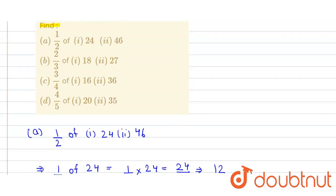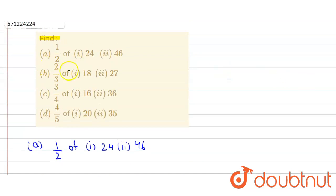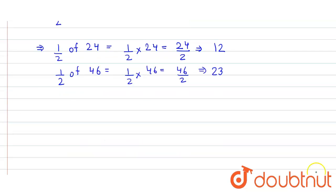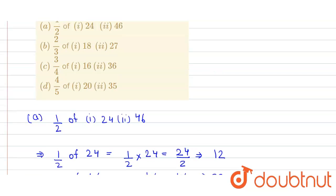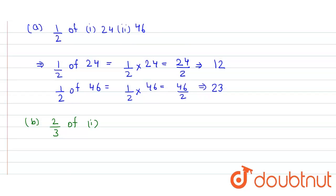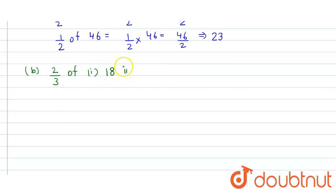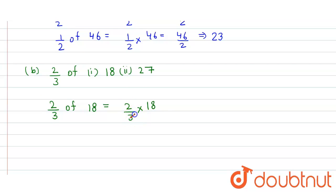Similarly, we follow the same procedure in other parts. The second part is 2/3 of two subparts: 18 and 27. So 2/3 of 18 equals 2/3 into 18. We cancel 3 with 18 to get 6, so that will be equals to 2 into 6.